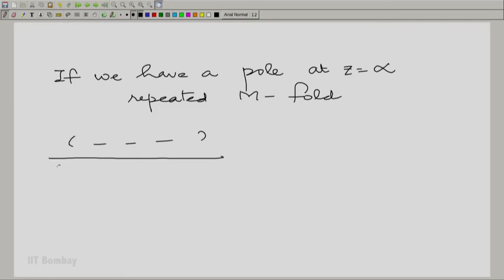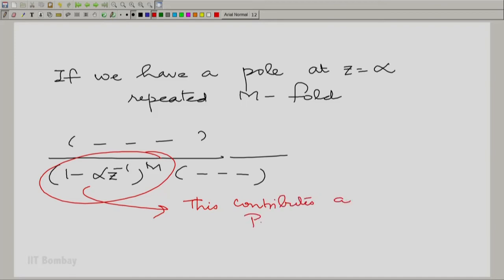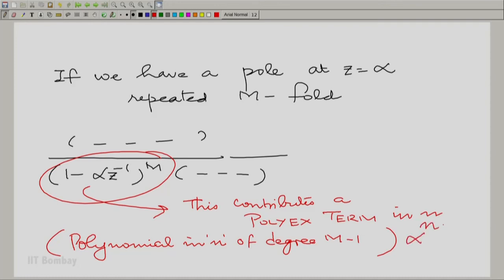Then what is the contribution of this pole in terms of the inverse Z-transform? Essentially, this contributes a poly-x term like before. And this poly-x term is a function of N. It would look something like a polynomial in N of degree capital M minus 1 multiplied by alpha raised to the power of N. So here the only change is you have an alpha raised to the power of N. And you would need to associate it either with U of N or U of minus N or whatever, appropriately shifted.